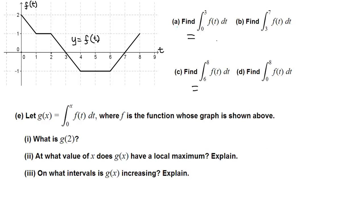In part a, we need to find the definite integral of f from 0 through 3, which is basically the area under the curve of f from 0 through 3. So 0 is here and 3 is here — we need to determine this area from 0 through 3.